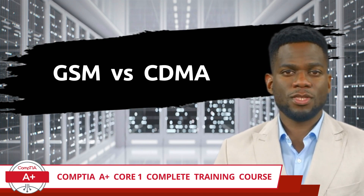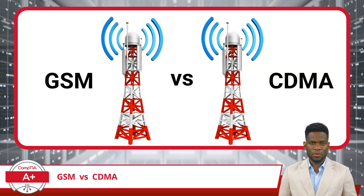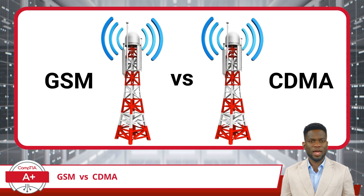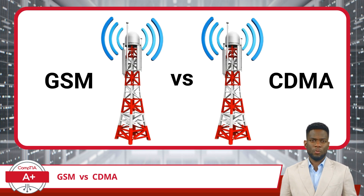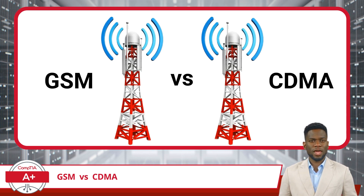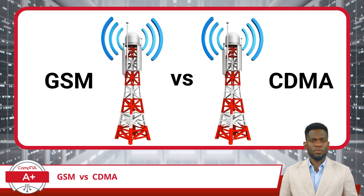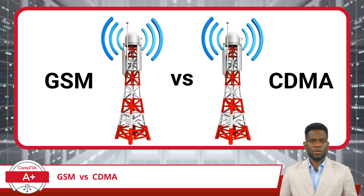GSM vs. CDMA. In the previous video, we discussed cellular connectivity, exploring how our mobile devices keep us connected on the go. Building upon that foundation, this video will pivot our discussion to two prevalent types of cellular networks that you might encounter: GSM and CDMA. These acronyms might sound technical, but they're simply different methods of achieving the same goal — keeping you connected with the world, whether you're making a call or browsing the internet.